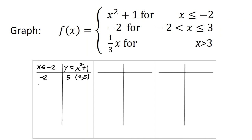Let's get a couple more points. If x is negative 3, that's negative 3 squared — negative times a negative — that's 9, plus 1 is 10. So this point is negative 3, 10. And just for continuity, when x is negative 4, that's 16 plus 1 is 17. So this point is negative 4, 17.